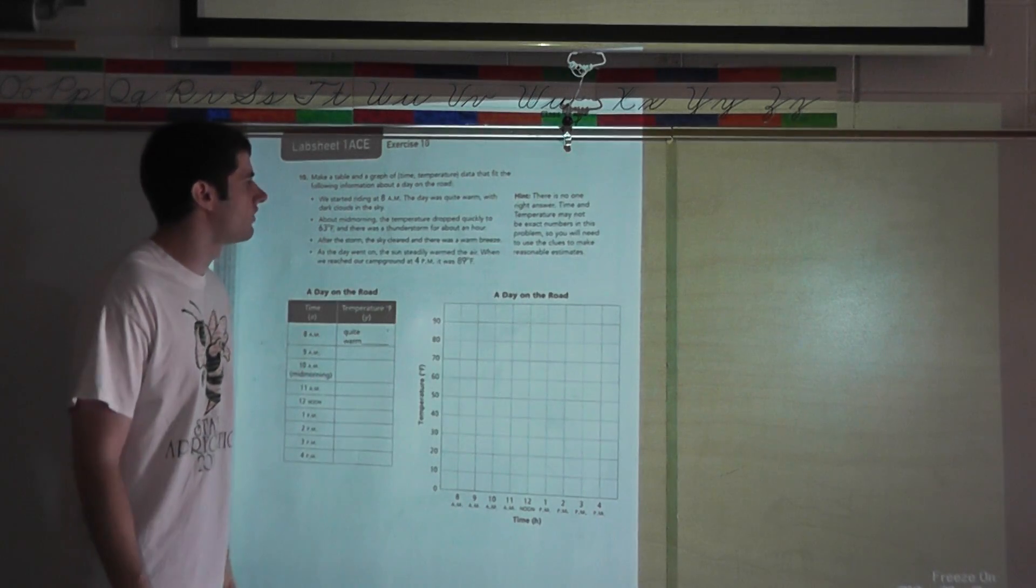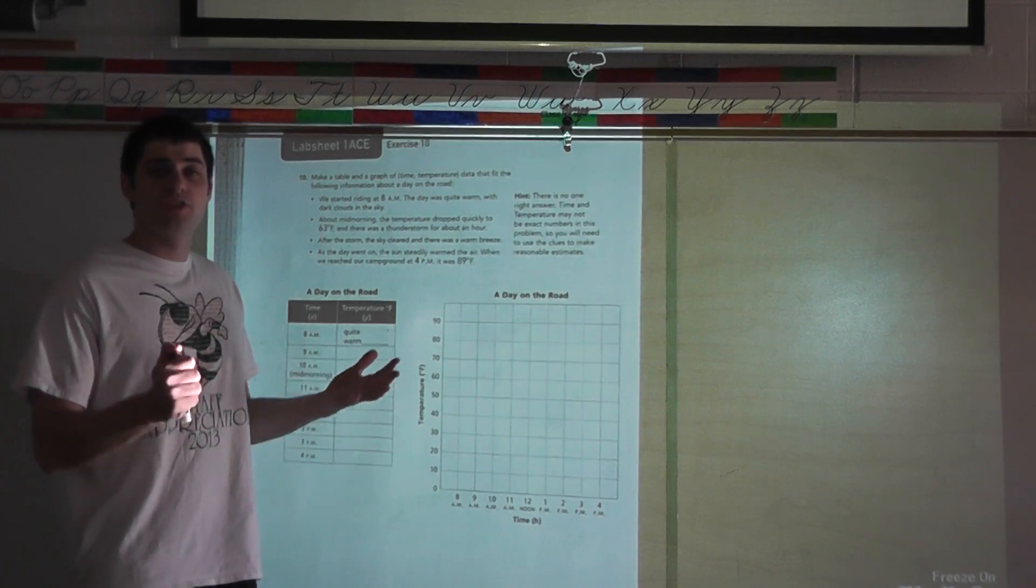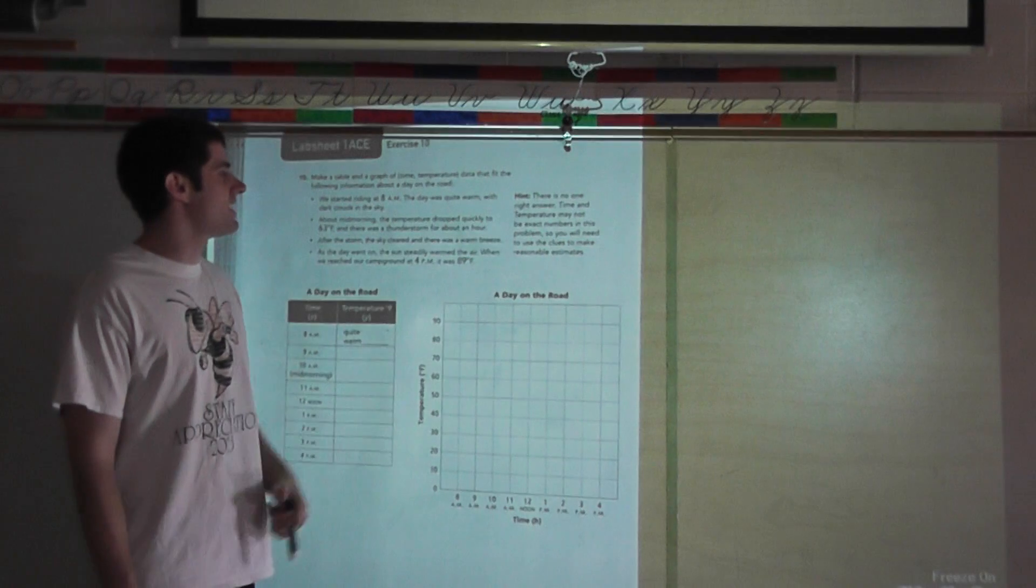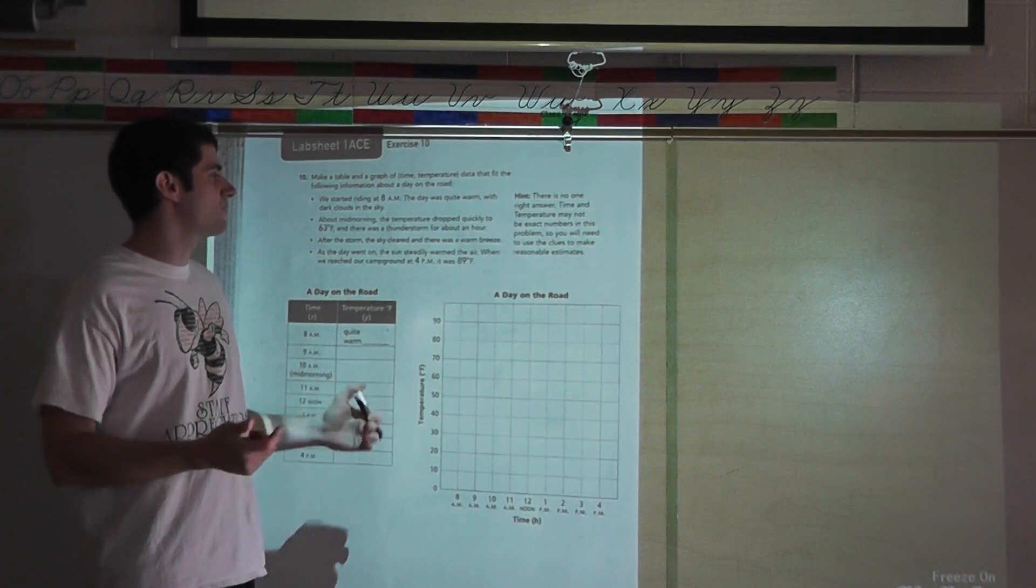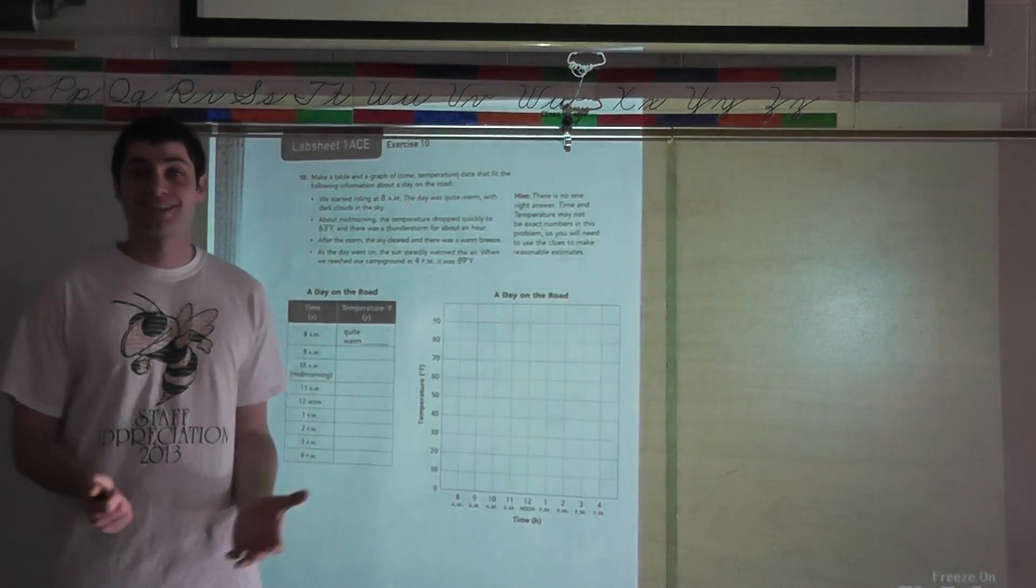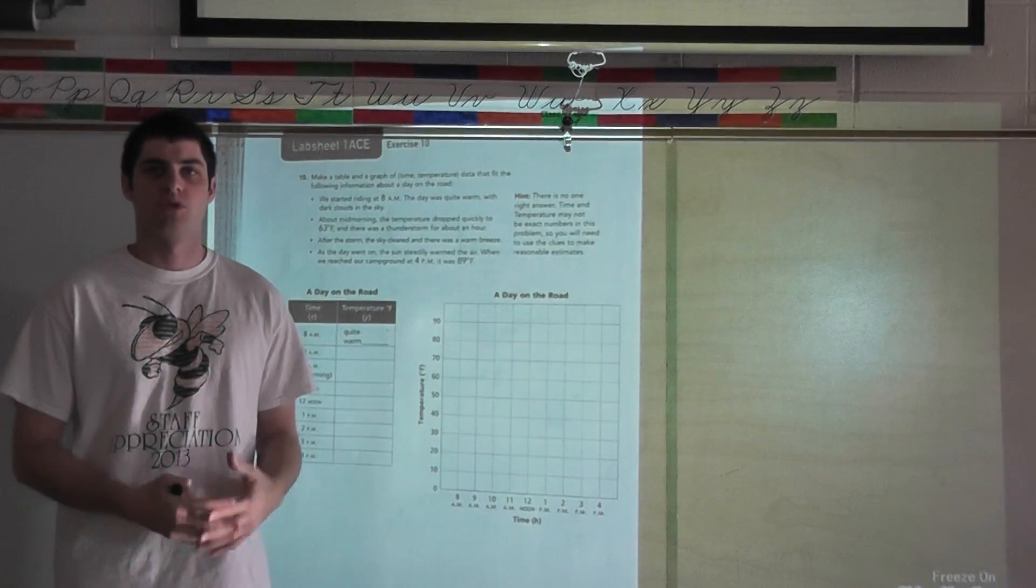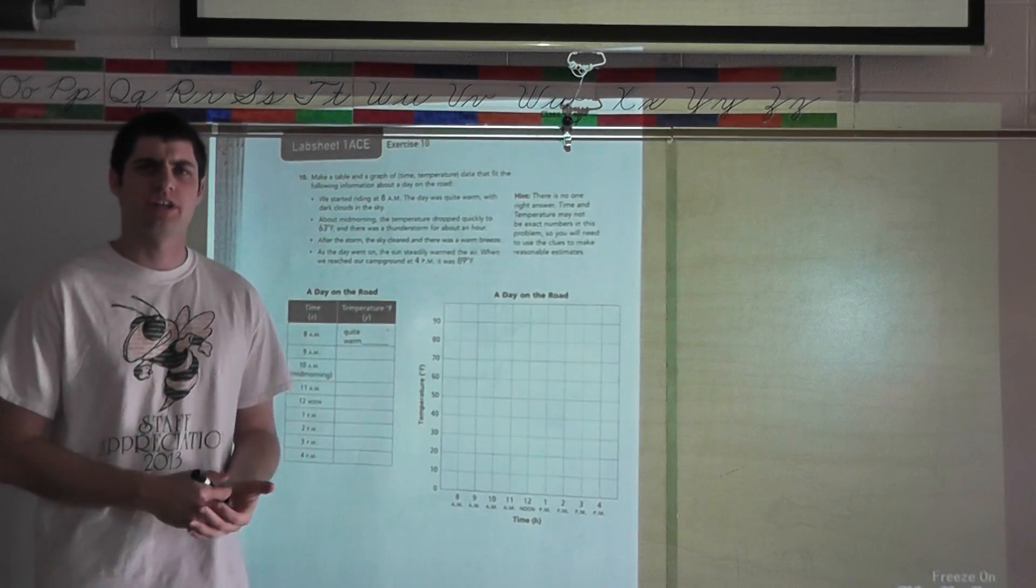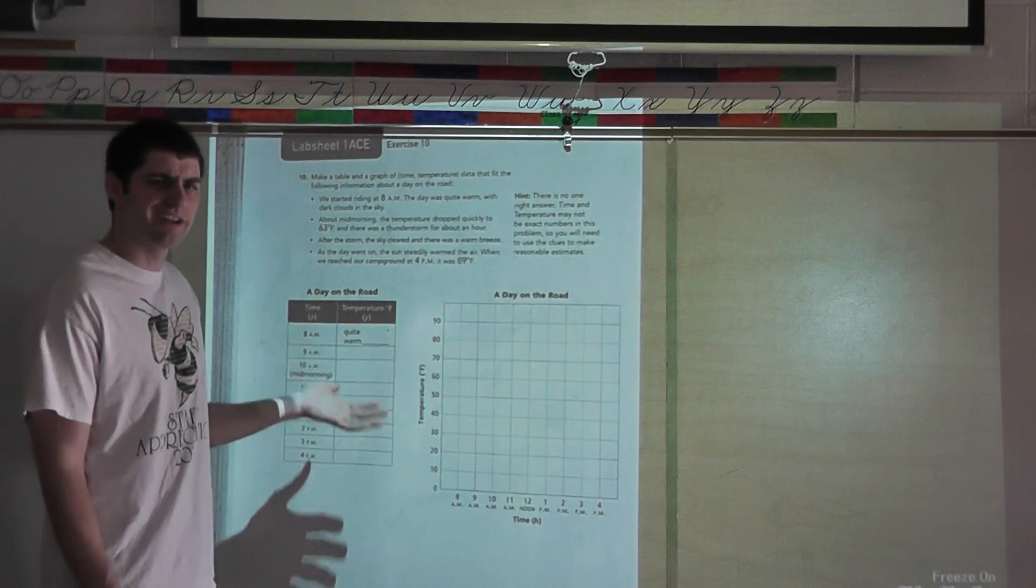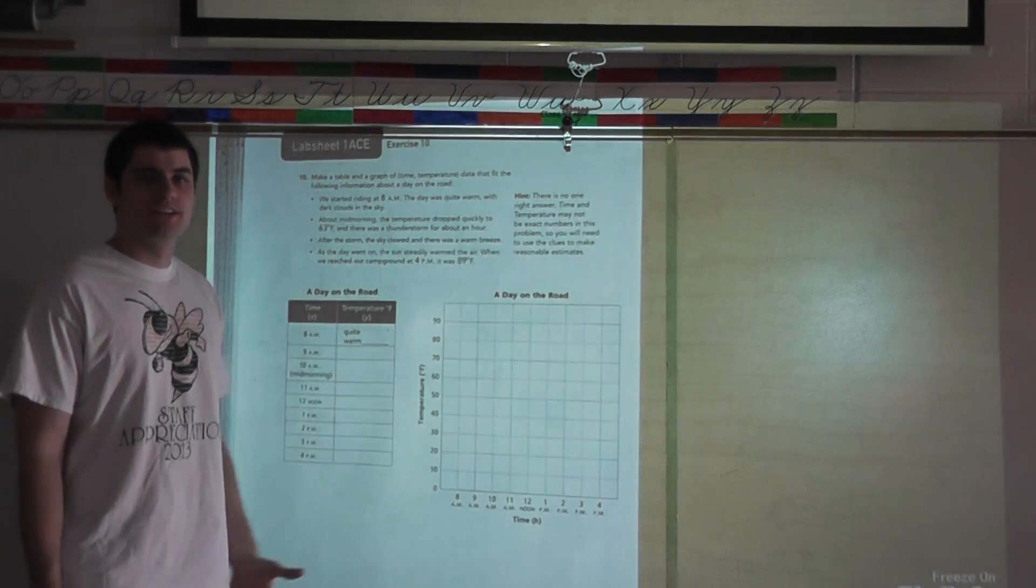Hint. There is no one right answer. Time and temperature may not be exact numbers in this problem. So you will need to use clues to make reasonable estimates. More math coming back. So think about, is it reasonable in our answer? Is what we're putting down going to make sense?